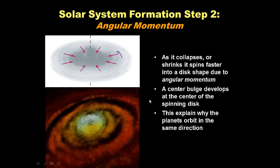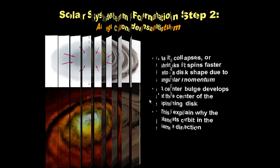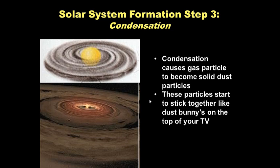We have this spinning cloud of gas, ice, and dust — but how do we get from gas to solid particles? That comes through condensation, solar system formation step three. Condensation causes gas particles to become solid dust particles. These dust particles then start to stick together, like dust bunnies on top of your TV, because they are electrostatically charged and attract each other. So now we have a spinning cloud of dust — no longer gas.